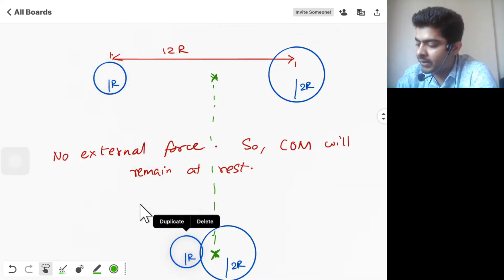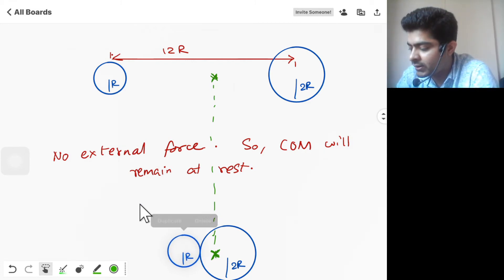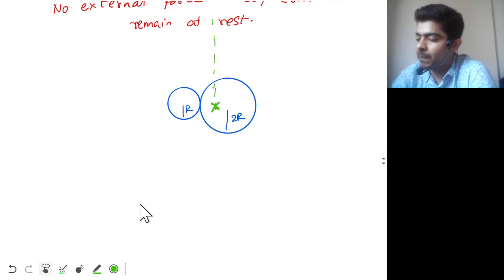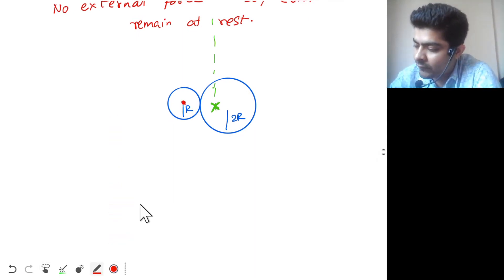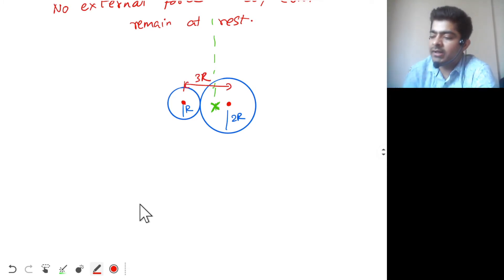The spheres will come and meet, just touching each other. This is the center of the first sphere, and this is the center of the second sphere. The distance between their centers will now be r + 2r = 3r.